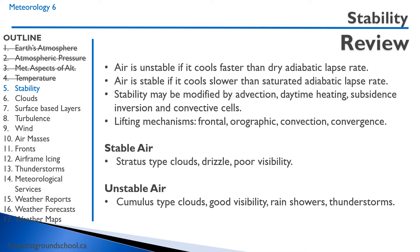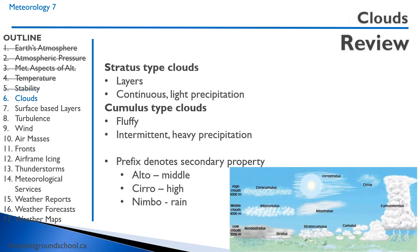Unstable air is characterized by cumulus-type clouds, good visibility, rain showers, and thunderstorms. Stratus-type clouds are layer-type clouds associated with continuous light precipitation. Cumulus clouds are fluffy and associated with intermittent heavy precipitation. The prefix on the cloud type denotes secondary properties: alto is middle, cirro is high, nimbo is rain.